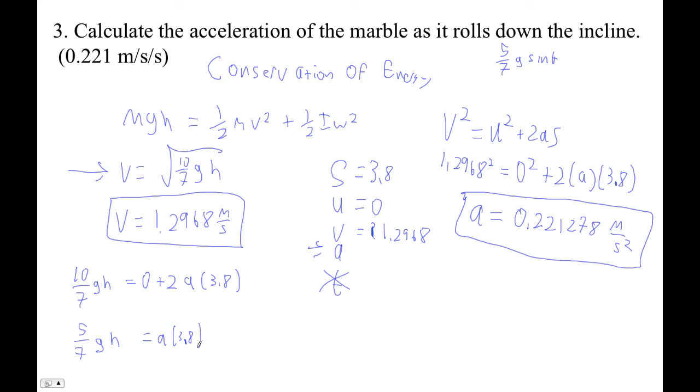And now all I have to do is divide that by 3.8, and I get 5 sevenths g times height change over the length of the ramp. So this would be the opposite side of the angle, divided by the hypotenuse, which is, of course, 5 sevenths g sine of that angle.